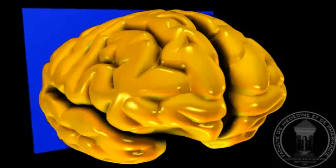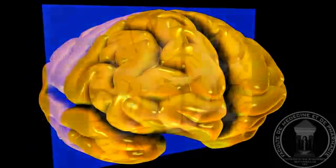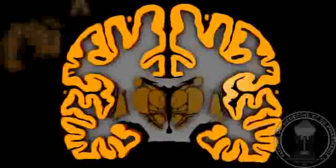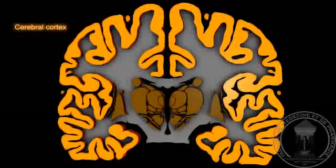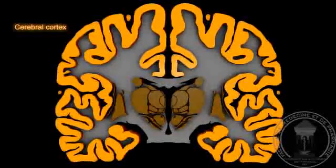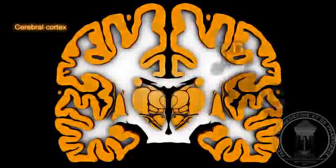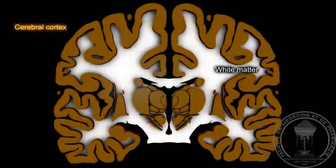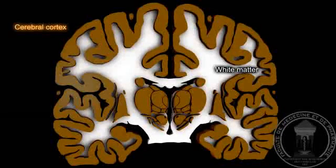Each cerebral hemisphere is divided into two distinct regions: a peripheral part, the cortex, or gray matter, containing the bodies of nerve cells, and a central part made of white matter that contains mainly axonal extensions of neurons and their myelin sheath.